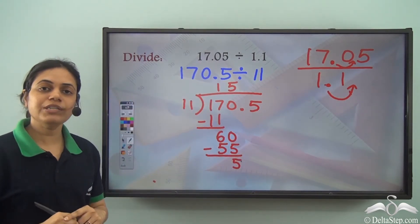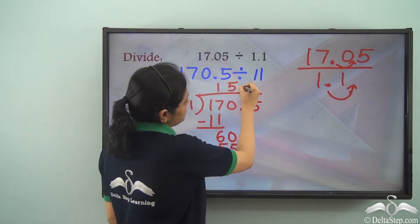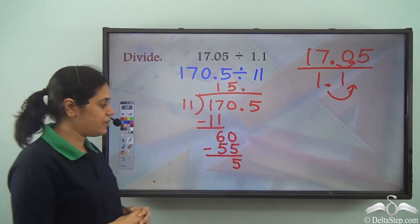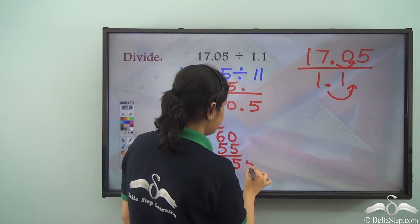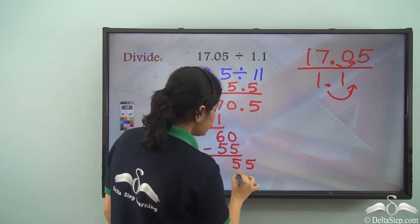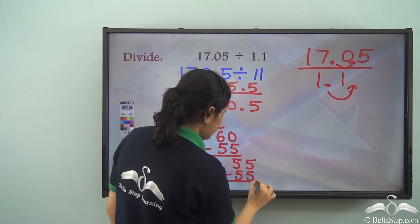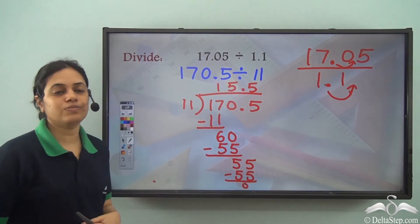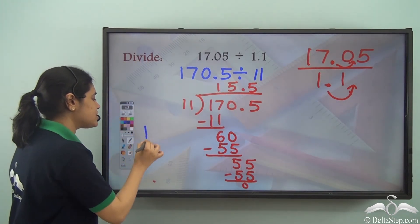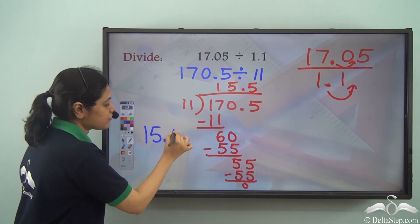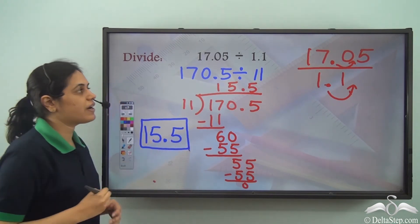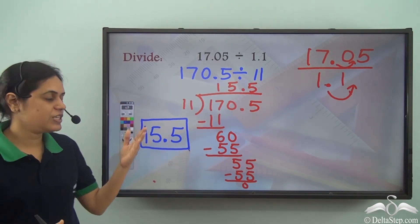Now we have a decimal point. So when I get a decimal point in the dividend, I put a decimal point in the quotient as well. And now we have a 5 here. So 11 into 5 is 55 again. And the remainder is 0. So the quotient is 15.5. So this is the answer. So 17.05 divided by 1.1 gives us 15.5.